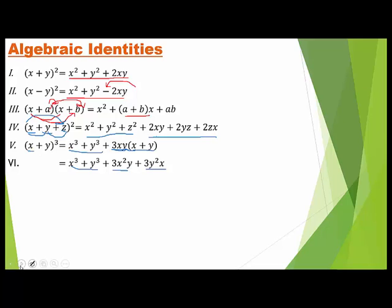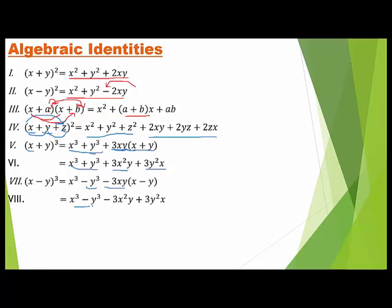The next identity is: (x minus y)³. Just place a negative sign wherever you see y. This gives x³ minus y³ minus 3xy(x minus y), which can also be written as x³ minus y³ minus 3x²y plus 3y²x.